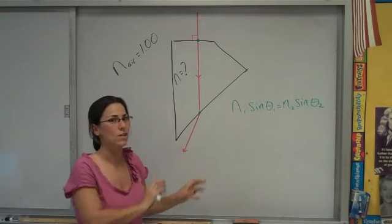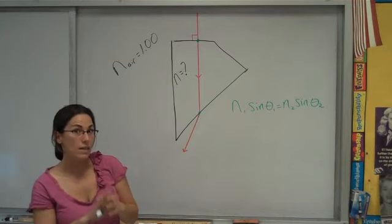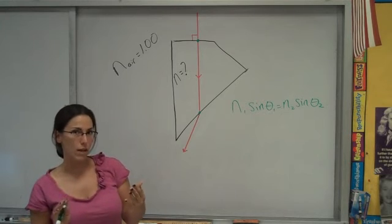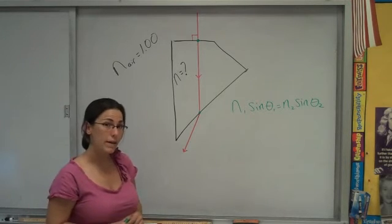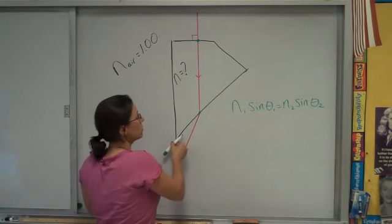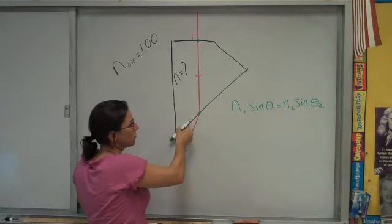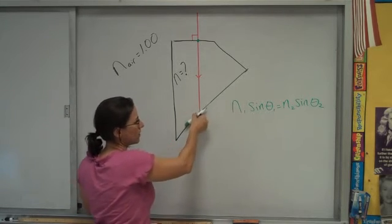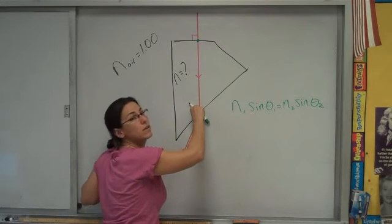And there's no normal line drawn in this picture. So that would be another good step to do, would be to just draw in the normal line. Normal means perpendicular. And in this case, it's perpendicular to the boundary. So here's the boundary, and here's 90 degrees to that boundary.